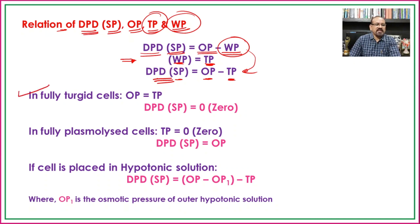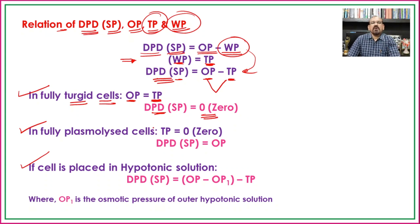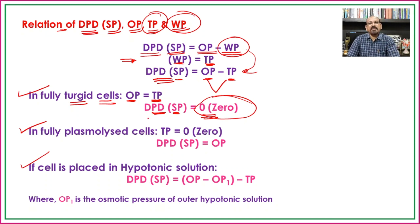If we consider the fully turgid cell, osmotic pressure equals turgor pressure. Therefore, DPD equals zero. Whatever the osmotic pressure of that cell, it will not absorb water because its DPD — its suction pressure, the ability to absorb water — is zero. In this way, we confirm that osmotic pressure alone is not responsible for water absorption; the DPD is responsible.